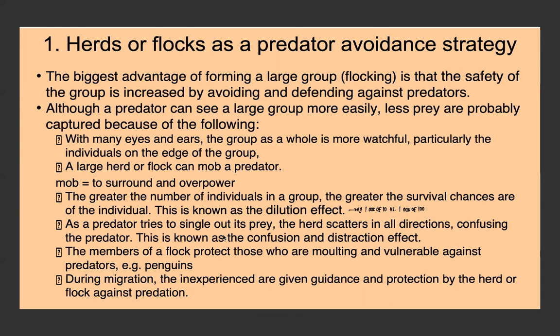It's also helpful to be in a herd because as the predator tries to single out its prey, the herd scatters in all directions and confuses the predator — this is called the confusion and distraction effect, especially noticeable in zebras. Also, members of the flock can protect those who are molting or vulnerable. In penguins and species like elephants or buffalo, the young and weak are kept in the middle of the herd protected by stronger individuals. During migration, inexperienced individuals are given guidance and protection by more experienced members.